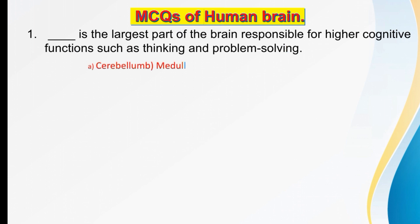Such as thinking and problem solving. Our options are: cerebrum, medulla oblongata, cerebellum, or brainstem. The right option is cerebrum. Cerebrum is the largest part of the brain responsible for higher cognitive functions such as thinking and problem solving.